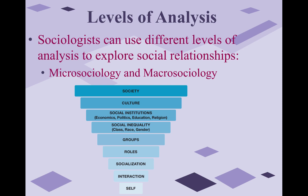Macro sociology is the level of analysis that studies large-scale social structures in order to determine how they affect the lives of groups and individuals. A macro sociological approach typically uses quantitative methods that look at questions of what and how instead of why. For example, micro analysis might look at interactions between a couple or a cashier and a shopper, while macro analysis might look at something like the economy and consumer behavior, or how a presidential election influences American morale.